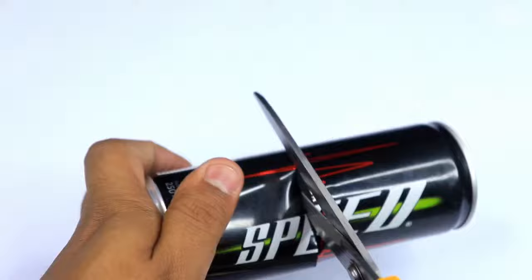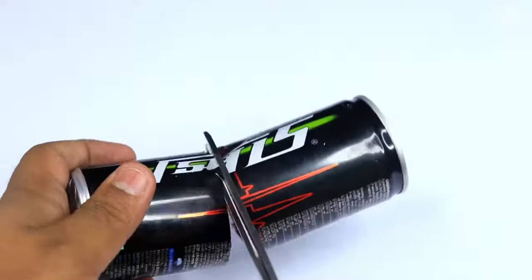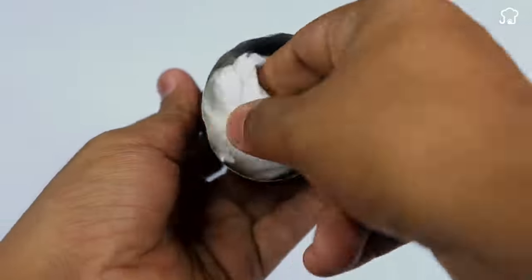We will reserve one of the pieces and clean the other so that there are no remains of moisture. Next, we will take a nail or screw, and with a hammer we will make a hole in the bottom of the can, as shown on the screen.